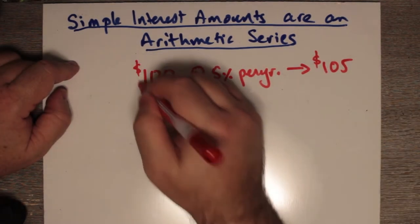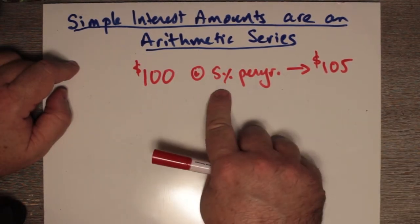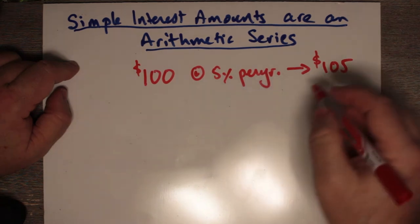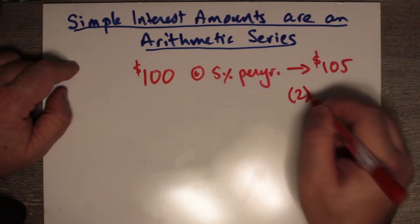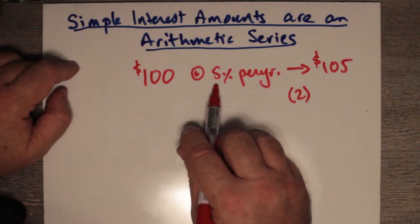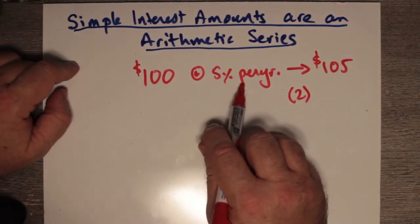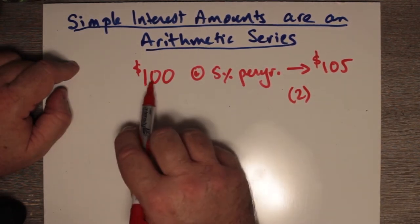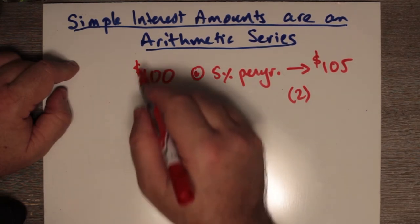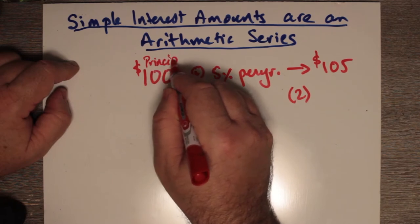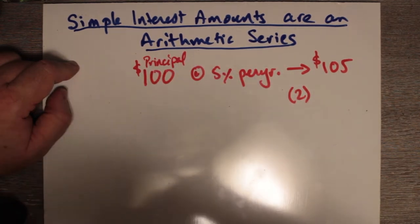Okay, so this is your investment. And so, this is year one. Year two, we calculate 5% again. Well, what do we calculate it on? Well, we go back here. We go back to the principal amount. The $100, by the way, is called the principal. It's the initial investment for simple interest.